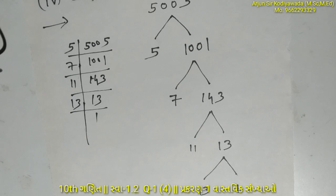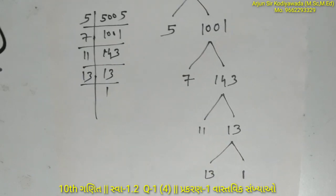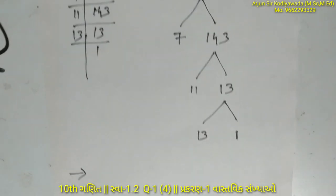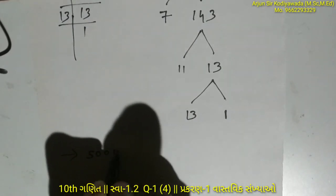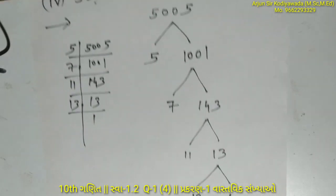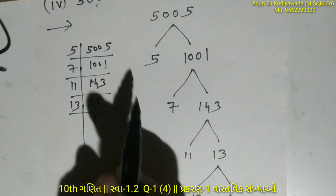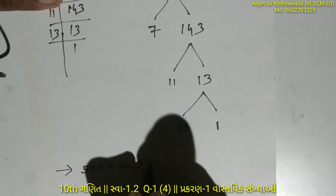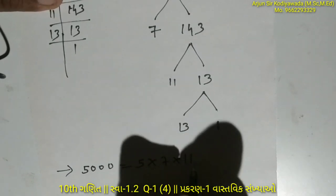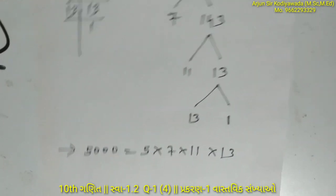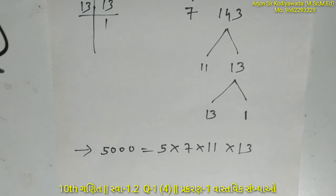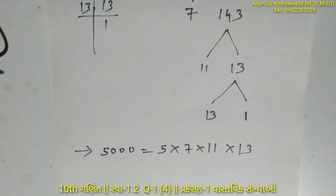Now we can express this as a product of prime factors. We need to show which prime numbers multiply together. The factors are 5, 7, 11, and 13. So 5 times 7 times 11 times 13 equals our original number. This completes our example.